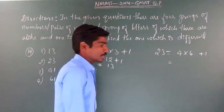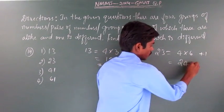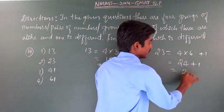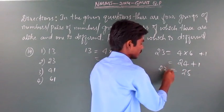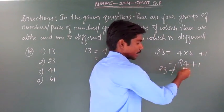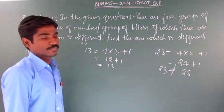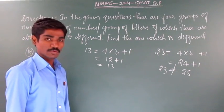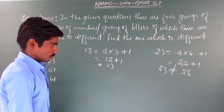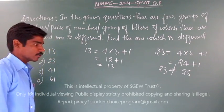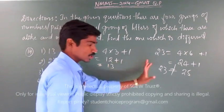But 4 into 6 is 24 plus 1 gives me 25. But 23 is not at all equal to 25. Let it be. What is happening here? This relation is not satisfying.